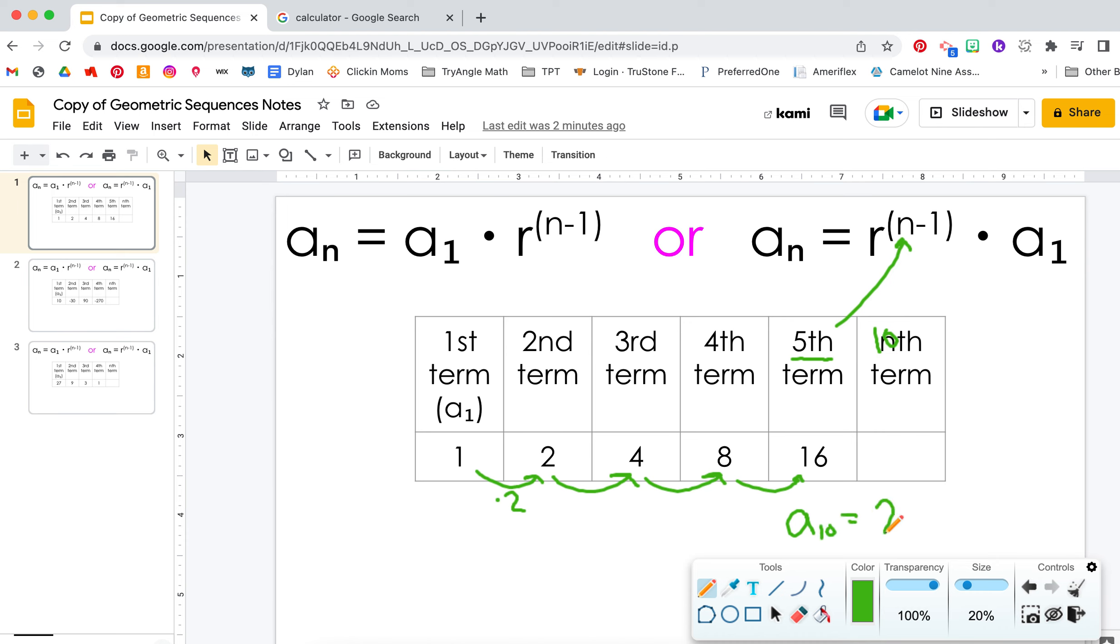Common ratio is 2. So R stands for the ratio or what you're multiplying by, to the power of 9 times, and then this is your starting number, we started with the number 1.